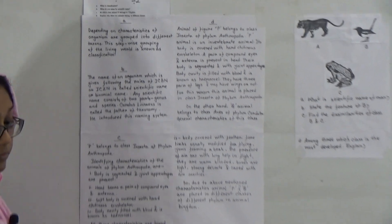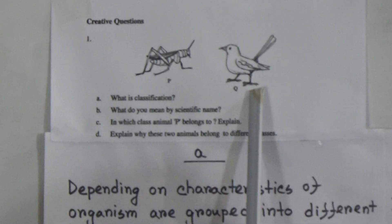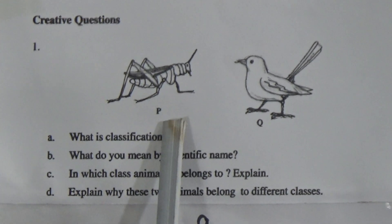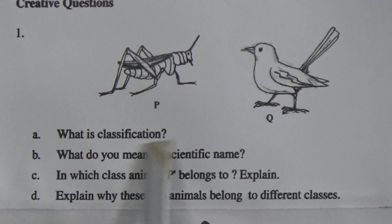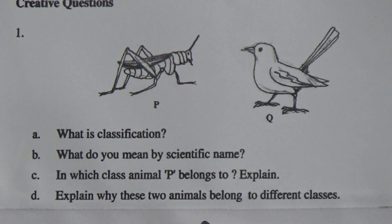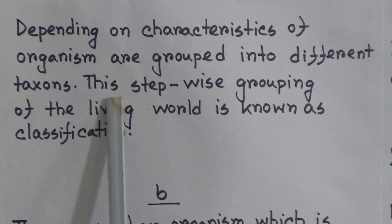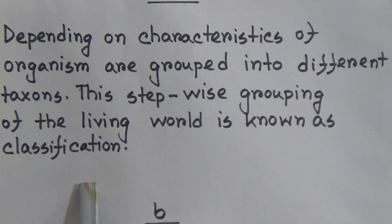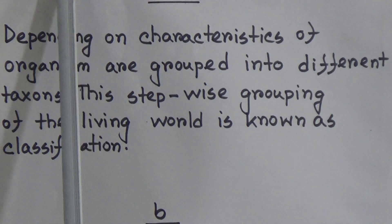Our first question is from our book. Here a grasshopper is given and a magpie or a bird is given — this picture is P and the other is Q. Our first question is: what is classification? Depending on the characteristics of organisms, they are grouped into different taxons. This stepwise grouping of the living world is known as classification.